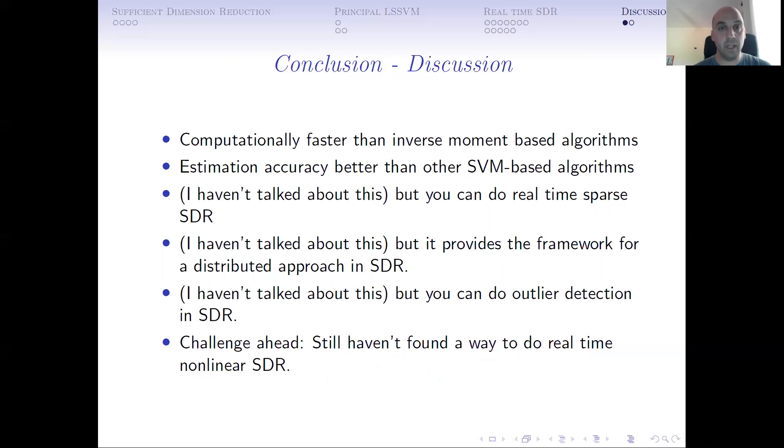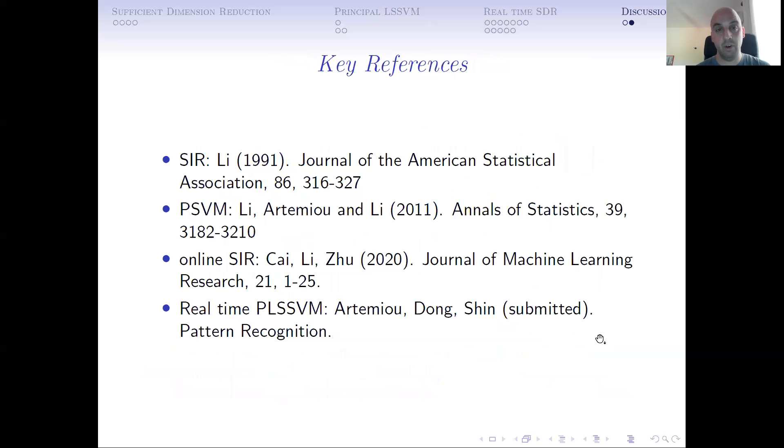Conclusions: computationally faster, estimates are much better than existing-based algorithms. You can do real-time, but I haven't discussed sparse SDR. You can do distributed approach, I haven't discussed it. Outlier detection, I haven't discussed it. We are still looking for a way to do non-linear sufficient reduction using this framework. And some key references. Thank you for listening.